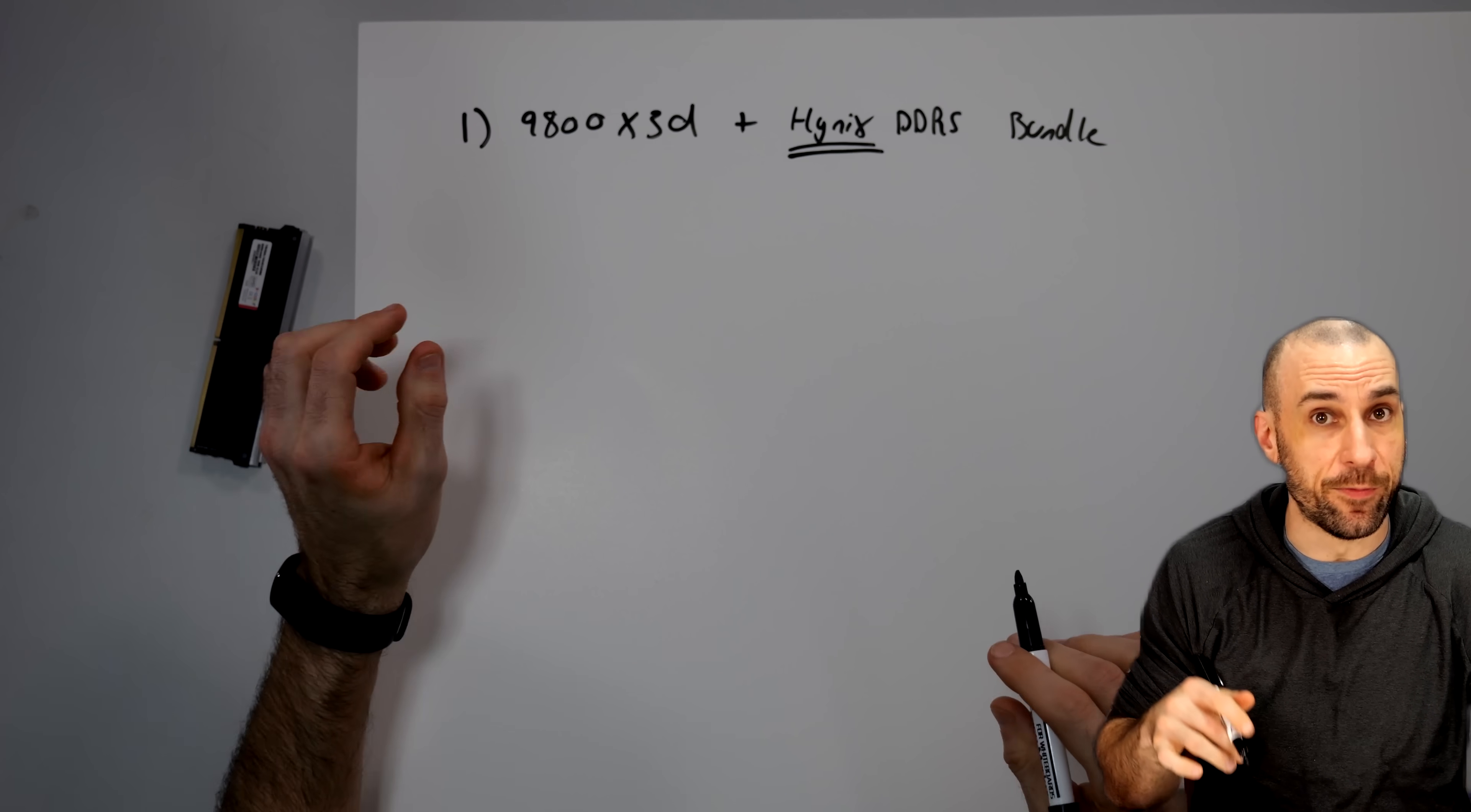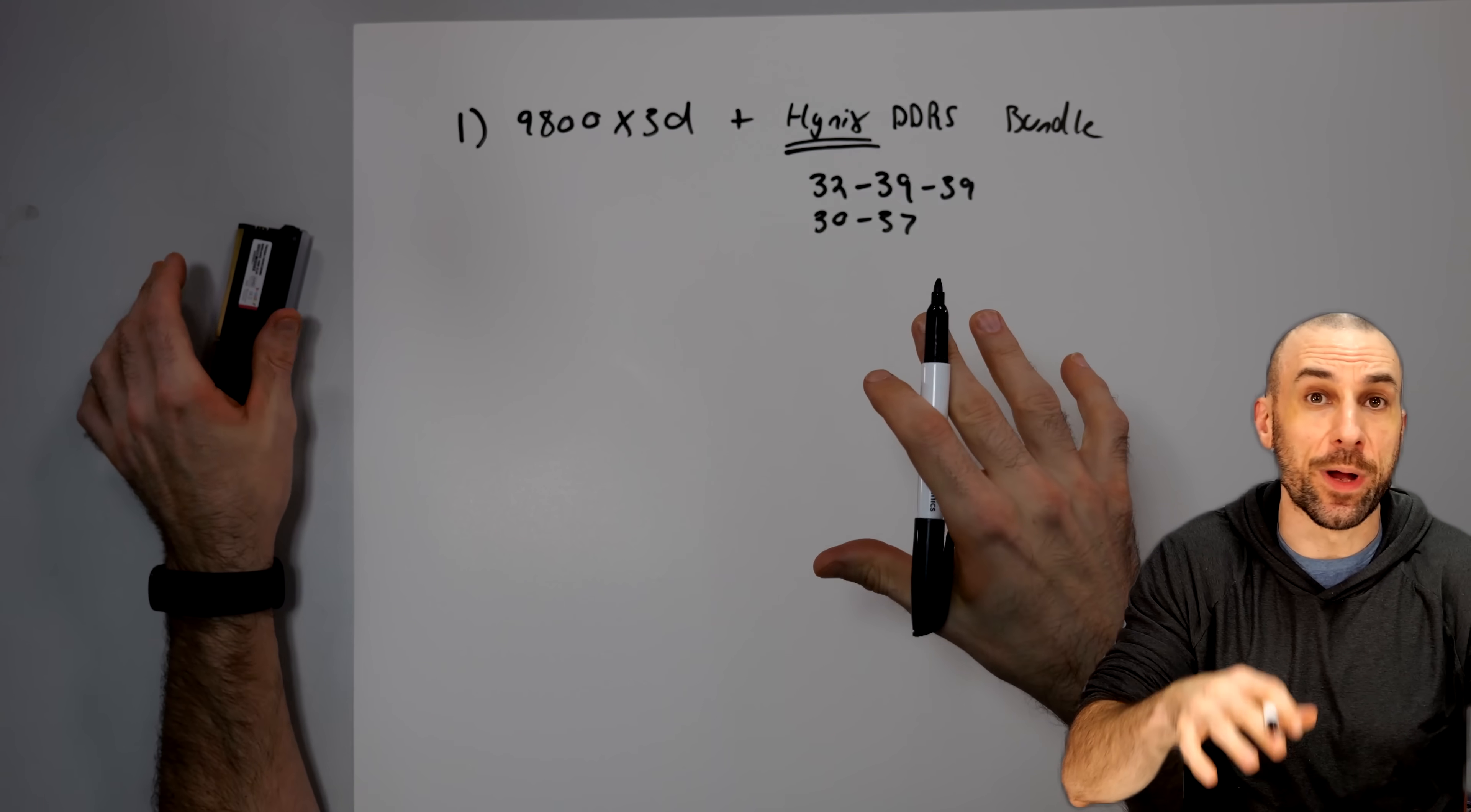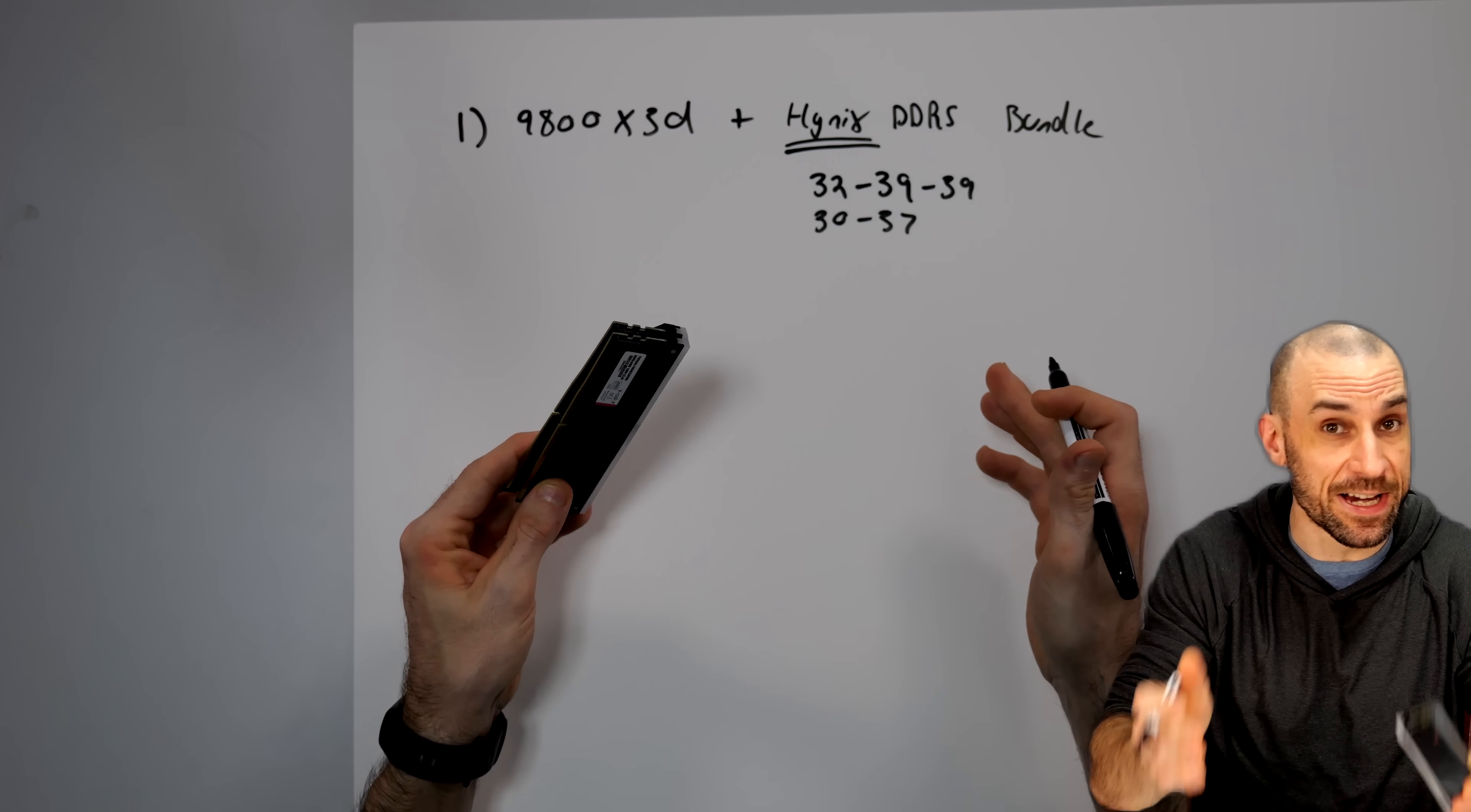Just make sure that when you do buy the bundle, you want to get Hynix sticks. They are selling a lot of Micron and a lot of Samsung ones, and you don't want to get those because if you get those, they're basically no better than the green ones. How do you know if you're getting Hynix in the bundle that you order? The first timing is significantly smaller than the second timing. So 32-39, 30-37, etc. You have to go into the actual specs of the RAM of the bundle that you get and check. If you see 36-36, nope. 40-40-40, nope.